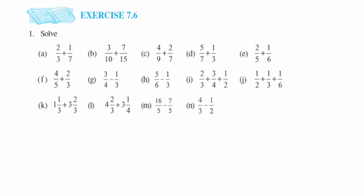Moving on to problem B: we have 3 upon 10 and 7 upon 15. Again, denominators are different, so we have to take the LCM of 10 and 15. The LCM of 15 and 10 is 30.